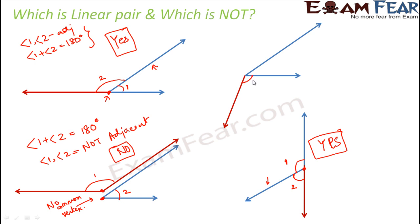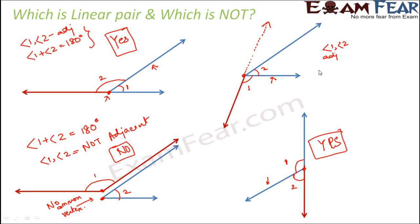In the fourth example, angle one and angle two are adjacent — they have a common vertex, a common arm, and no common interior points. However, their non-common sides are not exactly opposite rays. The ray would need to extend exactly opposite, but here it does not, so angle one plus angle two does not make a straight line and their sum is not equal to 180 degrees. Therefore, they do not form a linear pair.